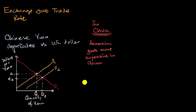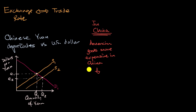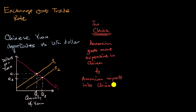So American goods become more expensive in China. If American cars become relatively more expensive, Chinese consumers are likely to buy fewer of them. And if we're talking about all American products, American imports into China will go down, because they're going to be relatively more expensive.